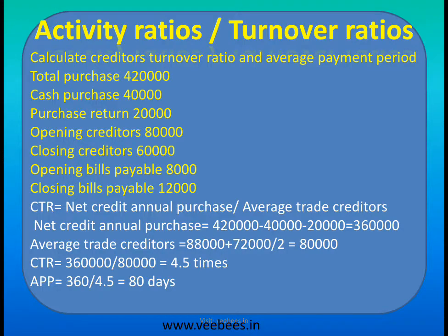Closing creditors is 60,000 and closing bills payable is 12,000, giving a combined closing figure of 72,000. Average trade creditors equals opening balance (78,000) plus closing balance (72,000) divided by 2, which equals 80,000.